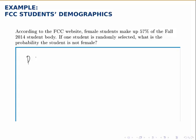We're doing a probability of something not occurring, and that's always one minus the probability that it does occur. So one minus the probability that our randomly selected student is female, which equals the proportion of students that are female.